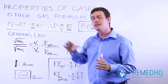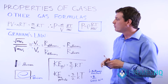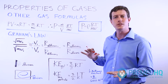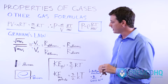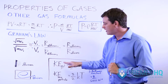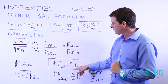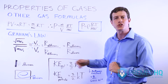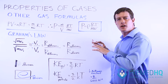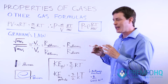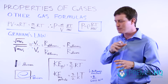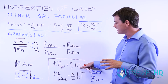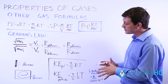Graham's Law is all about the inverse of the square root of molecular weight, which determines how quickly gas particles travel, diffuse, or effuse. One other thing you might encounter is this formula: the kinetic energy of a mole of gas particles equals 3/2 times R times temperature in Kelvin. Here R is the gas constant, most likely 8.314 joules per Kelvin per mole, since we're dealing with energy.